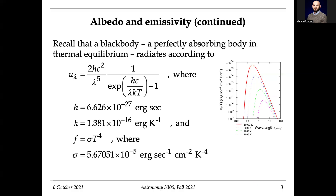They said uh-oh — that is going to lead to a disaster, because if you go out towards the ultraviolet, this should give you the result that you would have infinite energy. As nu goes to infinity, you would get infinite energy, and that doesn't make any sense.